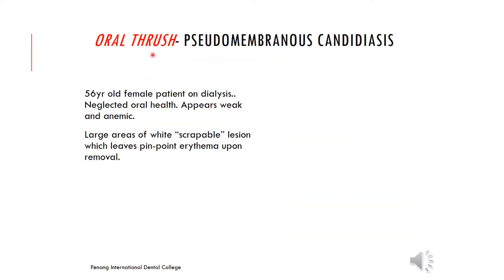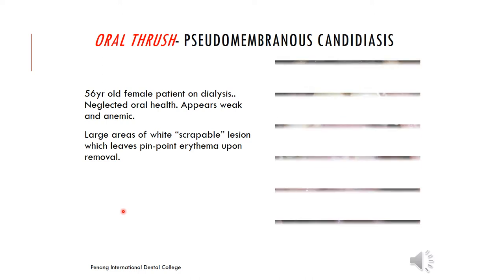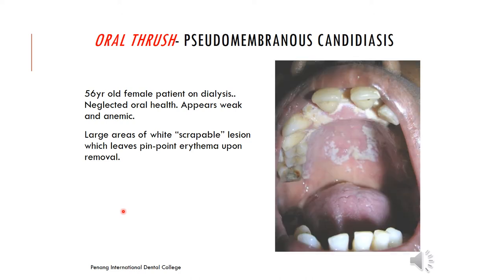Pseudomembranous candidiasis, also called oral thrush: this is a 56-year-old female patient on dialysis with a neglected oral cavity who appears weak and anemic. There are large areas of white scrapable lesions which leave pinpoint erythema upon removal. You might assume these white areas to be food debris, which is a natural differential diagnosis, but it is actually oral thrush. This patient had an underlying condition because of which the pseudomembranous candidiasis was seen.